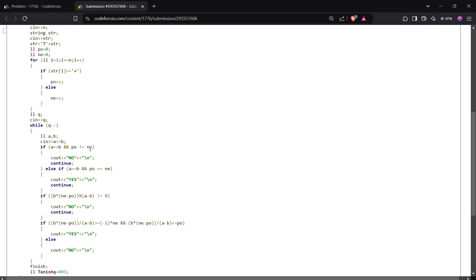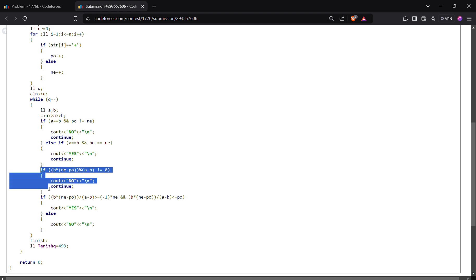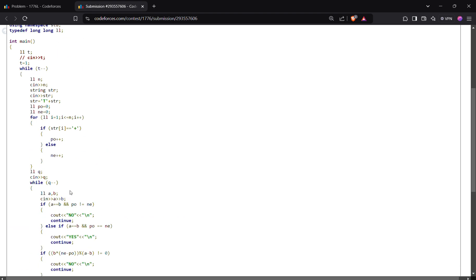Taking input q, taking input a and b. If a is equal to b and positive not equal to negative, outputting no. Else if they are both satisfied, outputting yes. Then this modulo operation to check if it is integer or not. If it is not, simply outputting no. And if it is, then we have to check for this range. That is basically the solution.